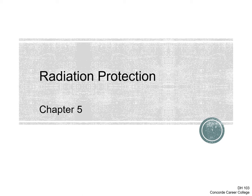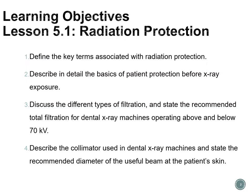We're moving on to chapter 5. The learning objectives are to define the key terms associated with radiation protection, describe in detail the basics of patient protection before x-ray exposure, discuss the different types of filtration, state recommended total filtration for dental x-ray machines operating above and below 70 kVp, describe the collimator used in dental x-ray machines, and state the recommended diameter of the useful beam at the patient's skin.